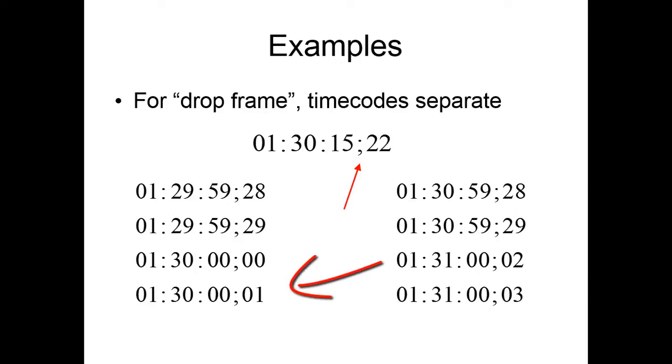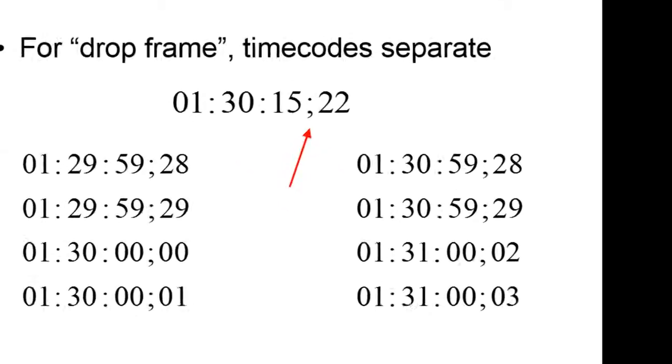And then, near the end of that minute, we have minute 30, second 59, frame 28, 29, and then we go for minute 31st. 31st is not multiple of 10. So, that means that the first second of that minute will skip frame 00 and frame 01. The labels only, not the actual frames.